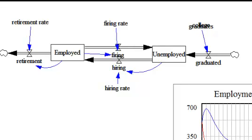And you're just going to have one cycle between the employed and the unemployed, with graduates coming in and retirees going out. The only things that will factor in are the firing rate and the hiring rate, the college graduation rate, and the retirement rate.